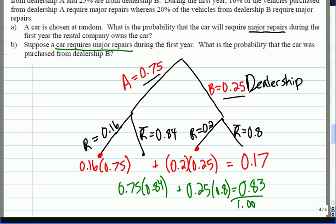So the next question says suppose a car requires major repairs. What is the probability the car was purchased from dealership B? Okay, so let's label these branches as number one, number two, number three, number four. Somebody tell me what's different now that I tell you that this car needs major repairs.